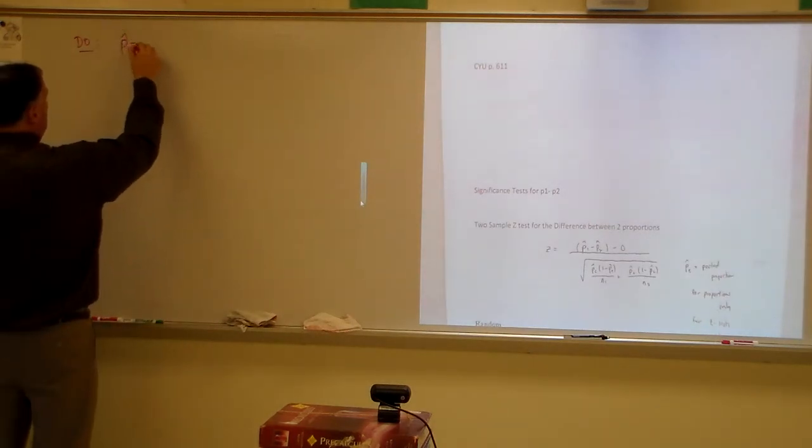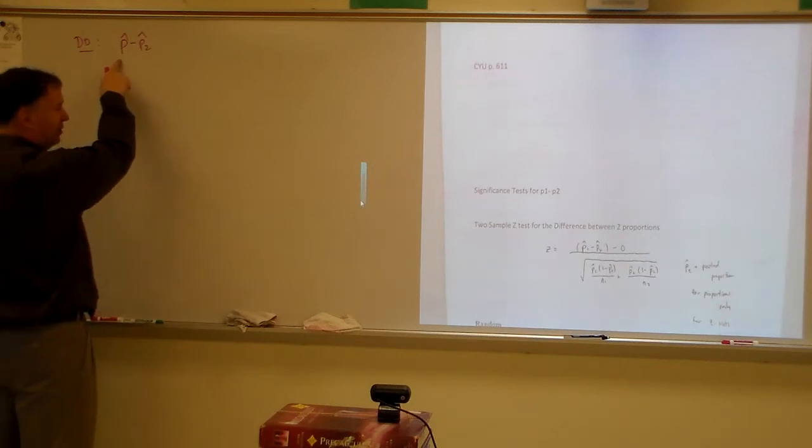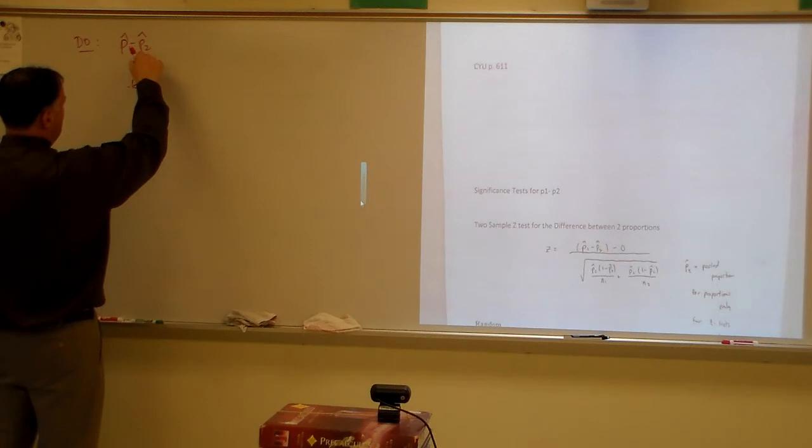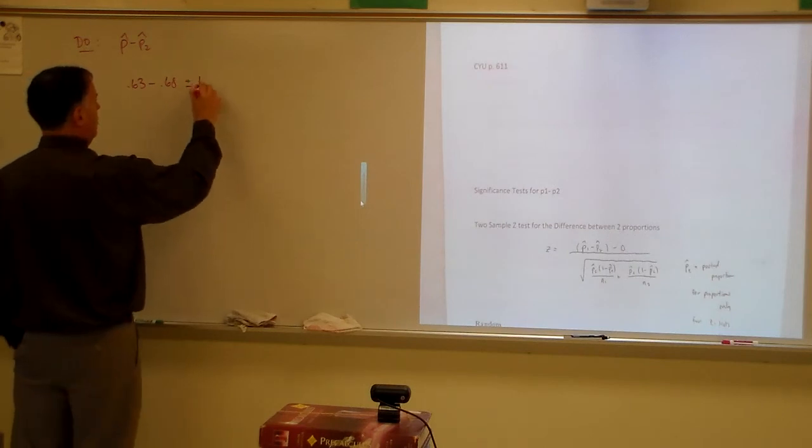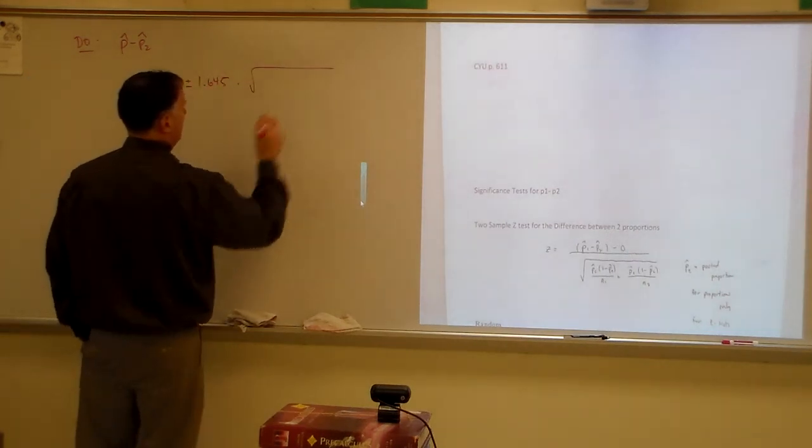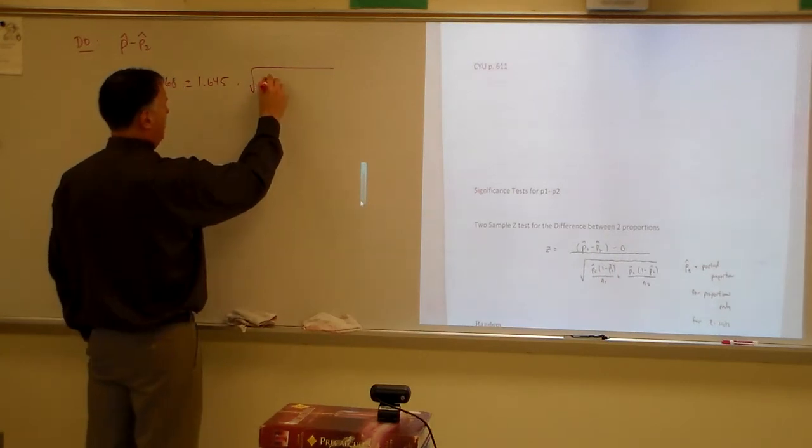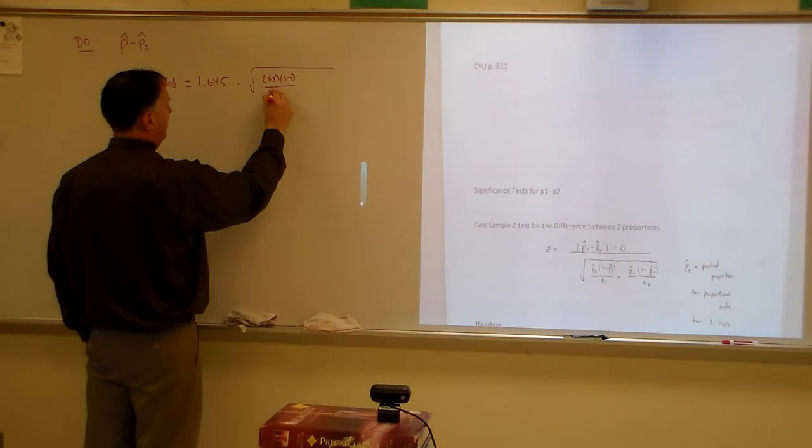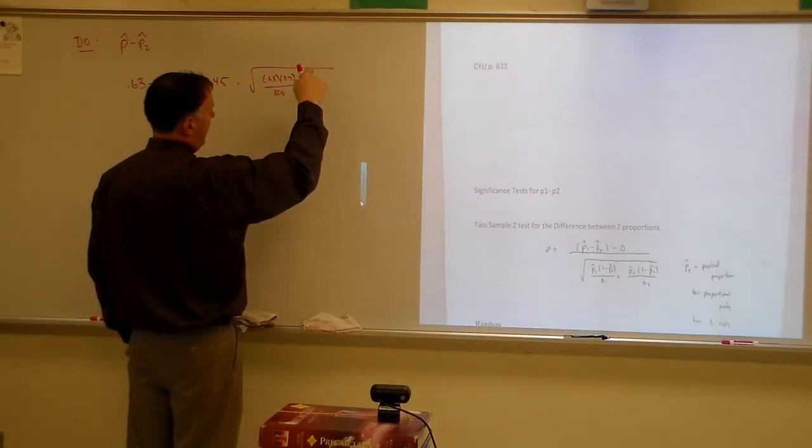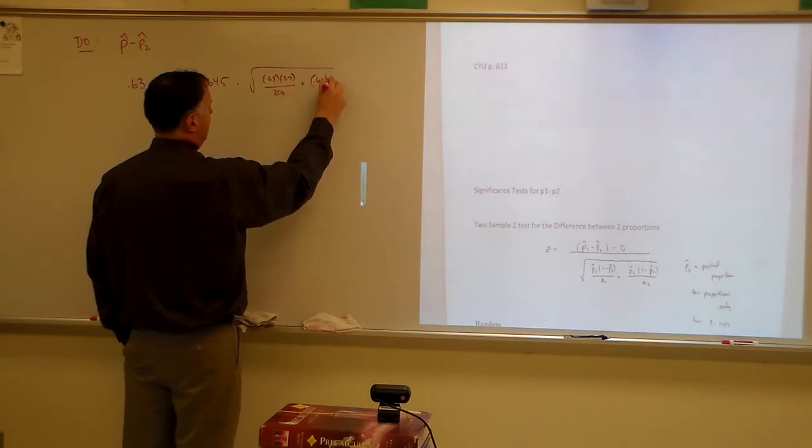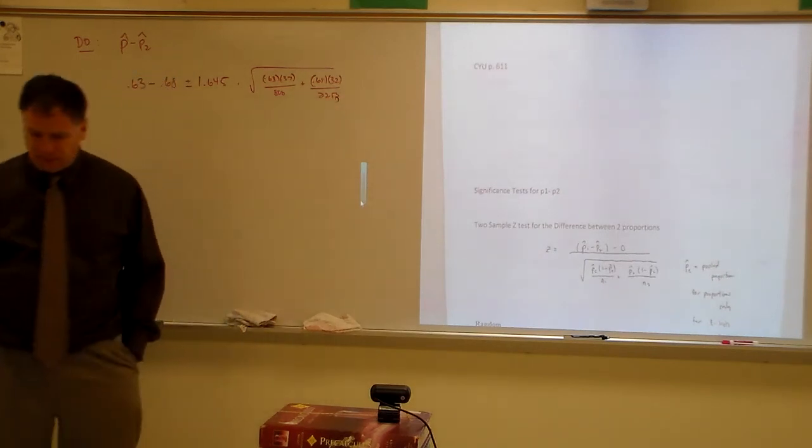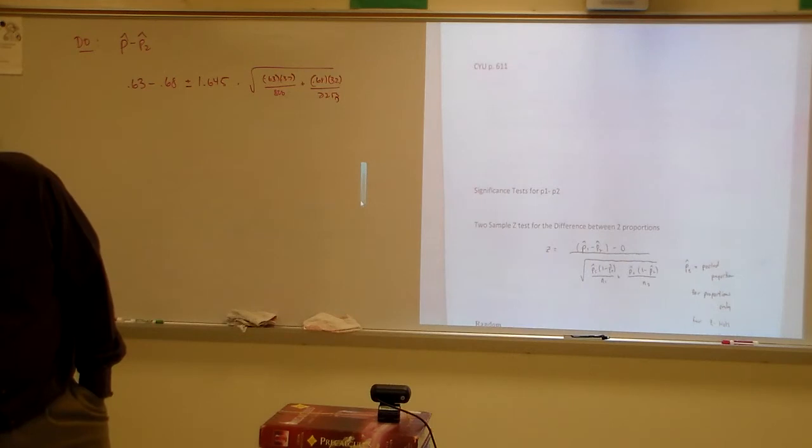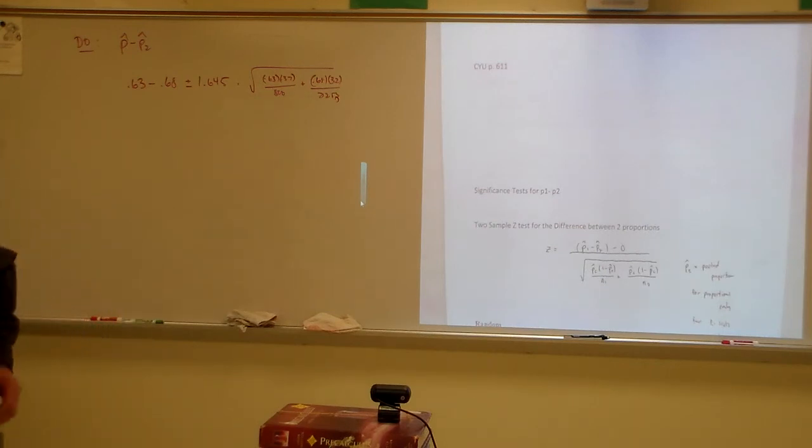So I think we said P1 minus P2. So it's going to be P1 minus P2. So the P1 was the students, right? So that was 0.63 minus the adults, 0.68, plus or minus a 90% confidence interval. 1.645 times 0.63 times 0.37 divided by 800. And then the other one we have is going to be 0.68 times 0.32 out of 2,253. Let me see if the book did some calculations for me. Not really. All right. Let's do it step by step.